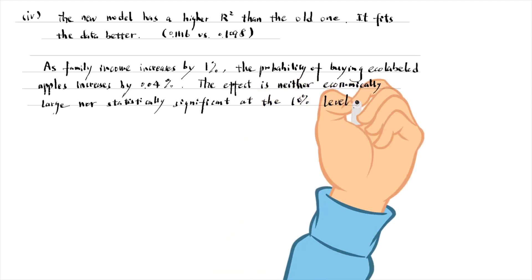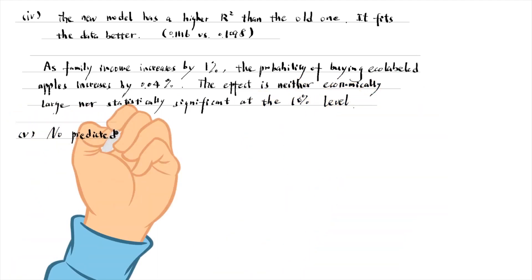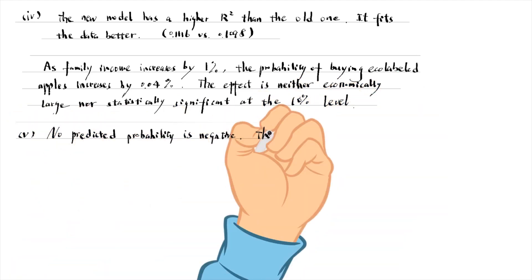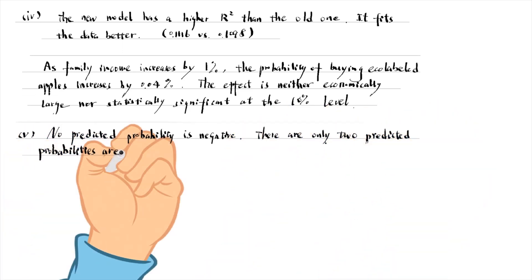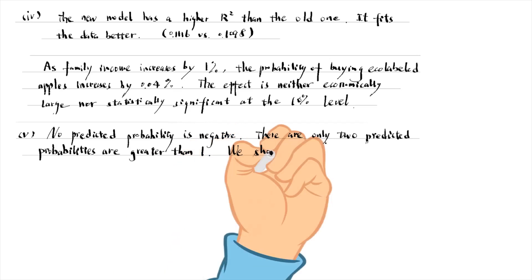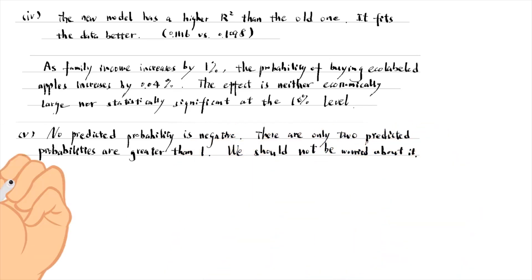For part 5, no predicted probability is negative. Out of 660 observations, only two predicted probabilities are greater than 1. We should not be worried about it.